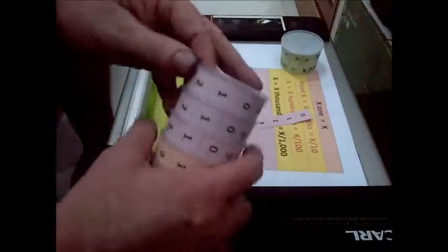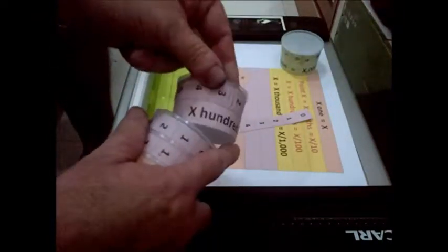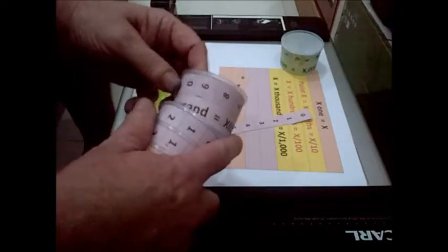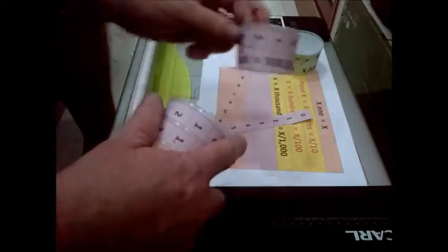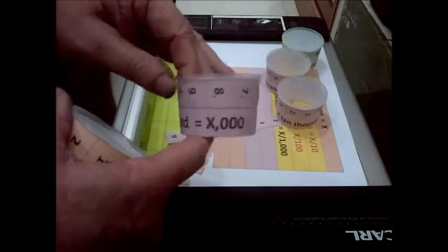And the same goes for all of these. So we have the 100,000s place in the thousands period. We have the 10,000 place value in the thousands period, the 1,000s or thousands place value.